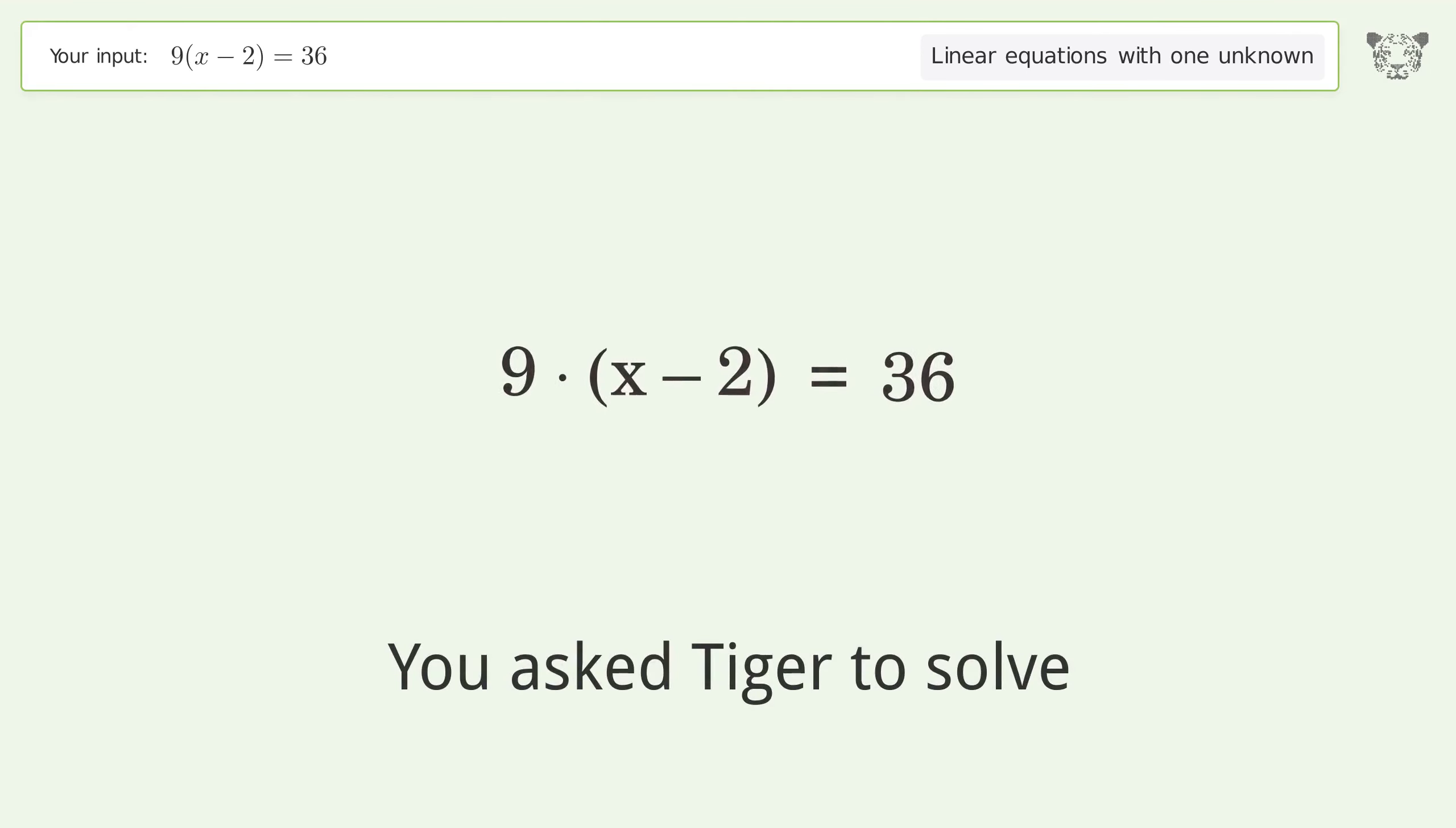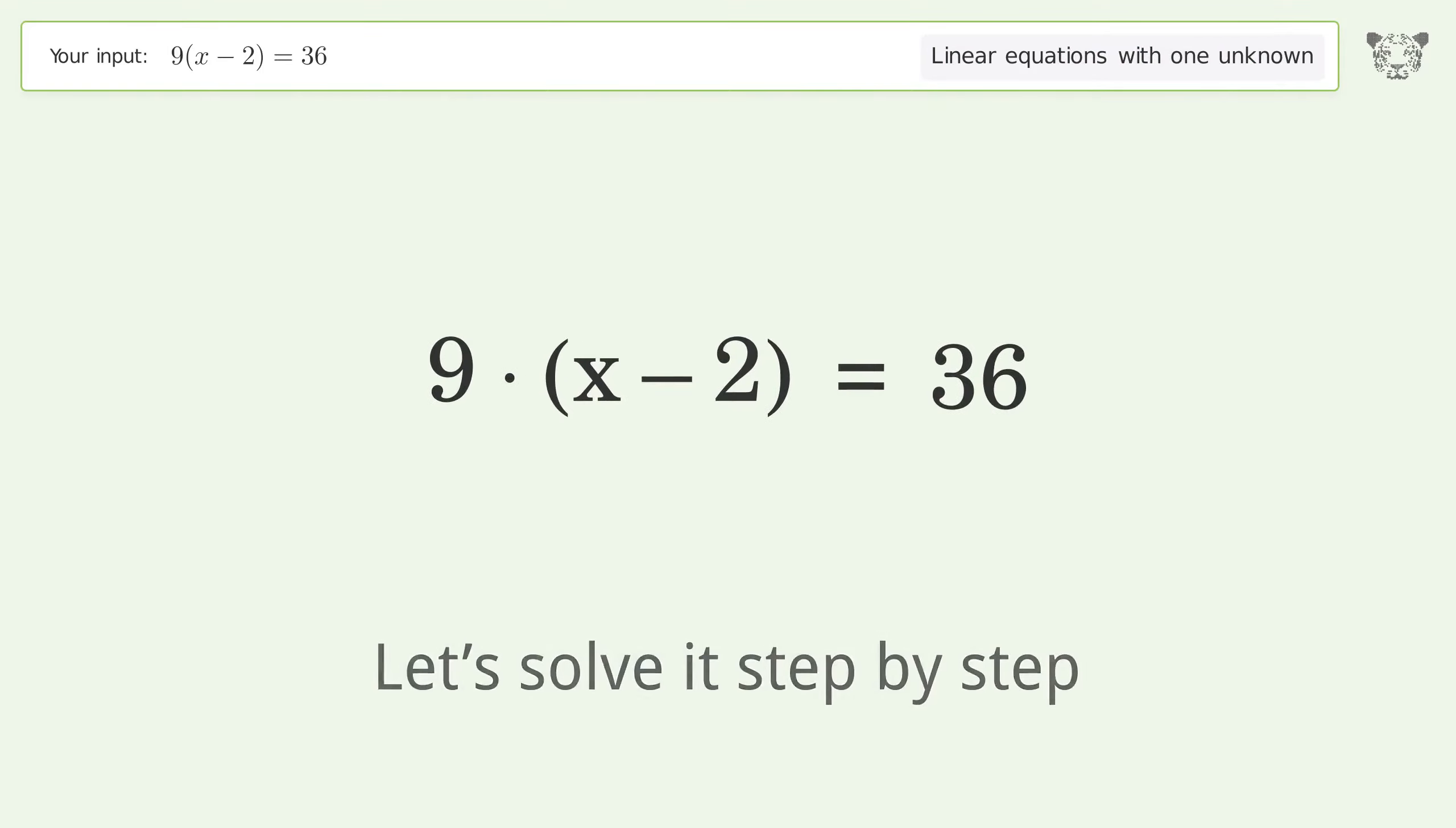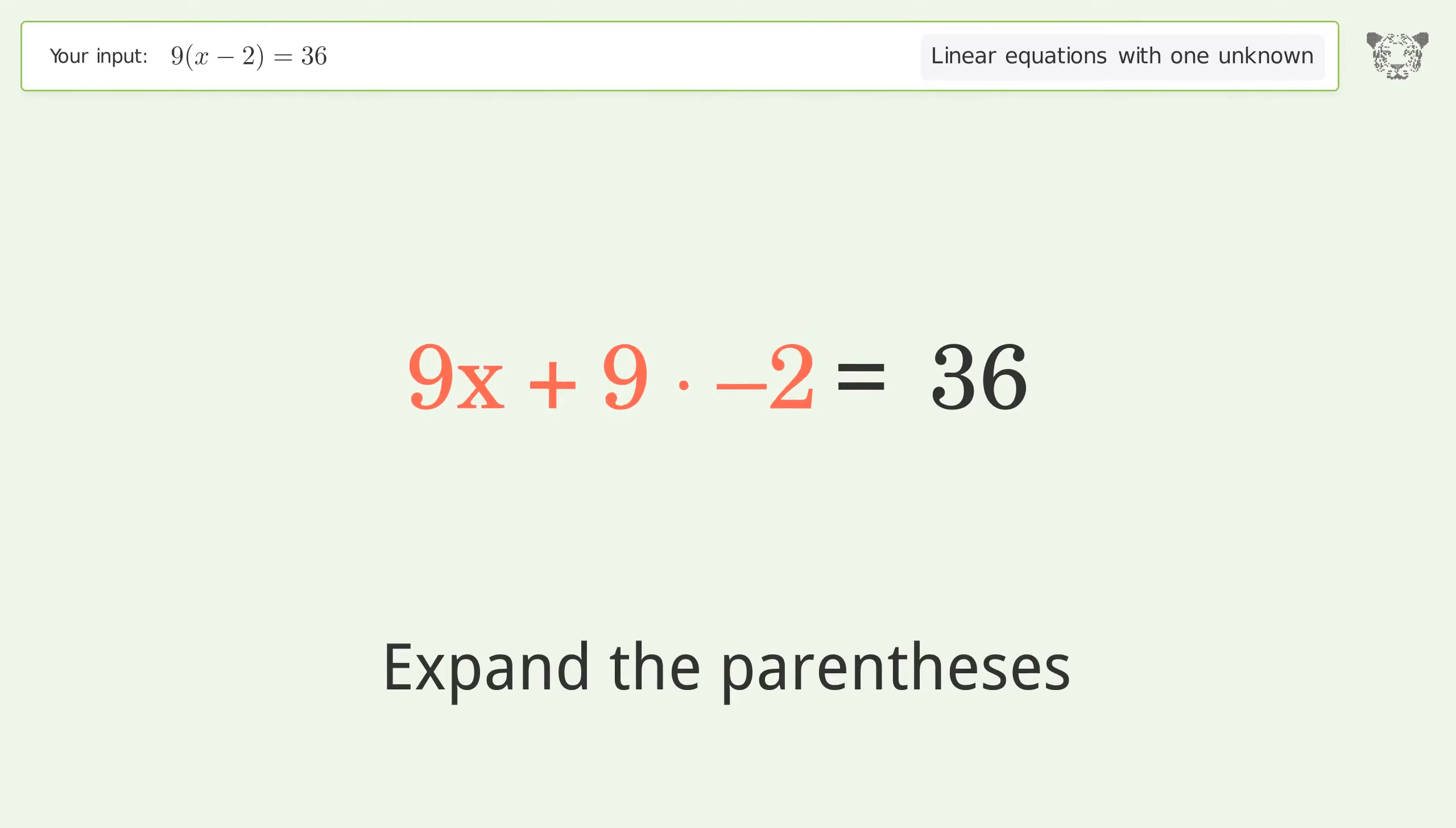You asked Tiger to solve this. This deals with linear equations with one unknown. The final result is x equals 6. Let's solve it step by step. Simplify the expression, expand the parentheses, simplify the arithmetic.